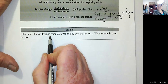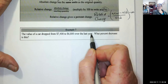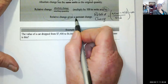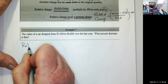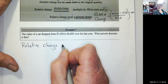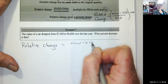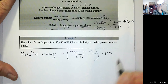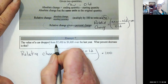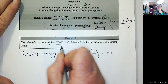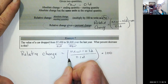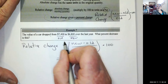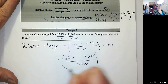The value of a car dropped from $7,400 to $6,800 over the last year. It asks: what percent decrease is this? This is a relative change because it's a percent change. Relative change is new minus old divided by old, times 100. The car dropped from $7,400 — that's the old value — to $6,800 — the new value. So relative change is $6,800 minus $7,400, divided by $7,400, times 100.